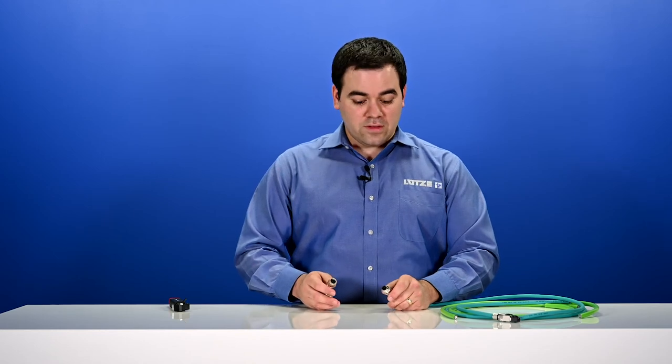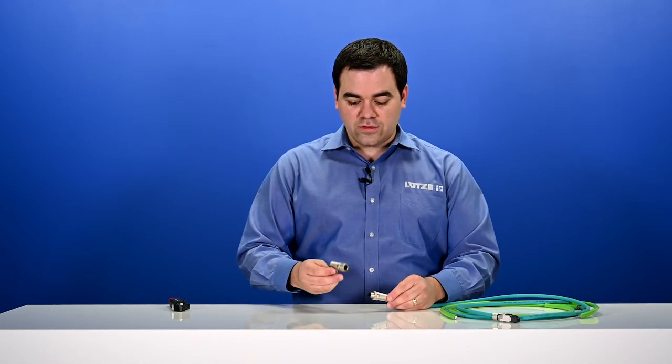And that's all it takes to install a Lutza M12 connector onto your cable. Whether you're installing an Ethernet network, an actuator or sensor, or field I.O., look no further than Lutza connectors and cables to make sure you get a connection from the device back to the controller that's safe and secure every time. These connectors are available in straight versions and 90-degree, in male and female, and in a variety of different codings. Reach out to your local Lutza representative to find out more about these and other Lutza products. Thanks again for watching our video, and have a great day.